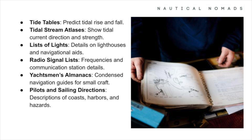In addition to charts, mariners rely on several supplementary tools. Tide tables predict the rise and fall of tides, helping you plan safe departures and arrivals. Tidal stream atlases show the direction and strength of tidal currents. Lists of lights provide detailed information about lighthouses and other navigational aids. Radio signal lists include frequencies and details for communication stations. Yachtsman's almanacs are condensed guides for small craft navigation, offering data like sunrise and sunset times and harbour facilities. Pilots and sailing directions give detailed descriptions of coastal features, harbour approaches, and potential hazards. Together, these tools complement nautical charts, giving you a comprehensive understanding of the marine environment.